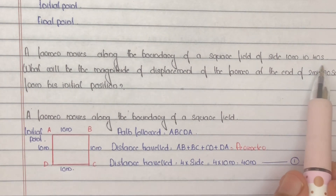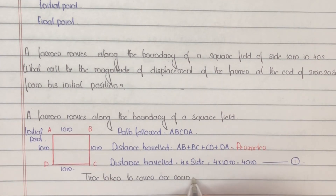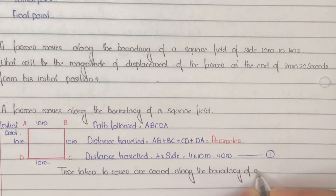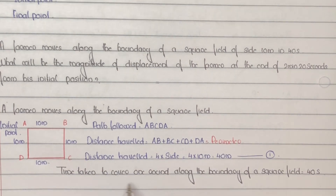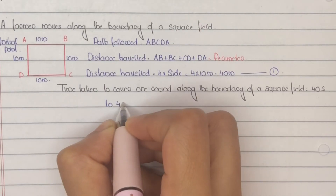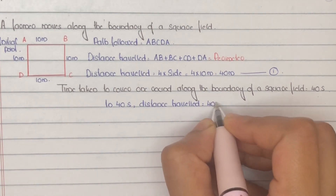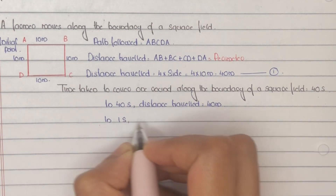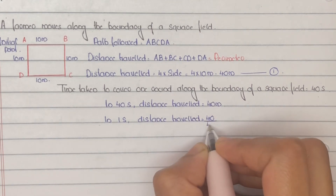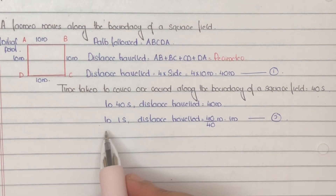In 40 seconds — that is, the time taken by the farmer to cover one round is 40 seconds. Time taken to cover 40 metres is 40 seconds. That is, in 40 seconds, distance travelled is 40 metres (one round). So in 1 second, distance travelled will be 40 ÷ 40 = 1 metre. Mark it as Equation 2: in 1 second, distance travelled is 1 metre.